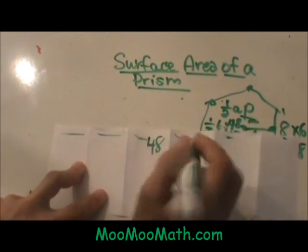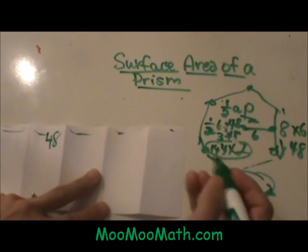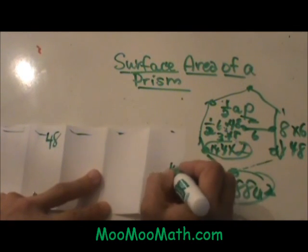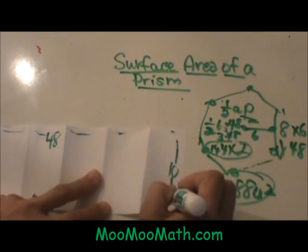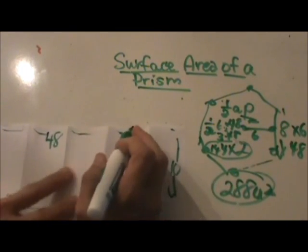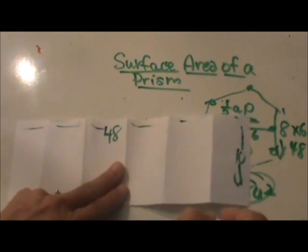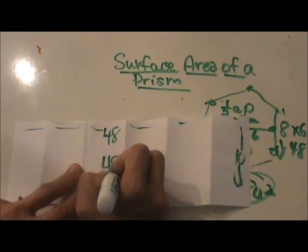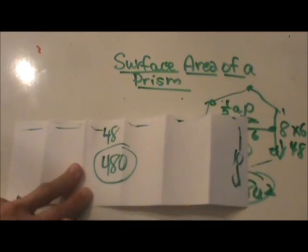So that means this side is 48, and the height I never gave it to you, we are going to say the height is 10. So if this is 10 units and this is 48, I just do length times width to get 480 square units for what we call the lateral area, or the sides of the polygon.